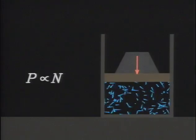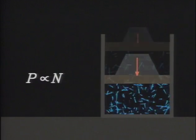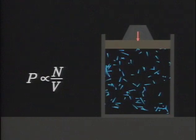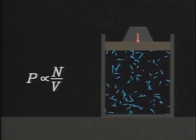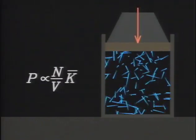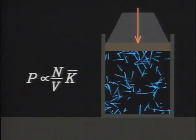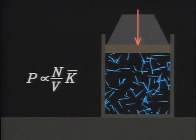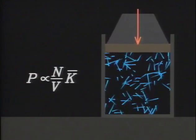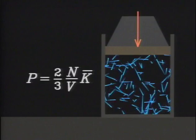Expressed in modern terms, they found that the pressure in a gas is proportional to the number of molecules and inversely proportional to the volume. And it's also proportional to the average kinetic energy of a molecule. By applying Newton's laws of motion to the individual gas molecules, they found that the constant of proportionality is simply two-thirds.